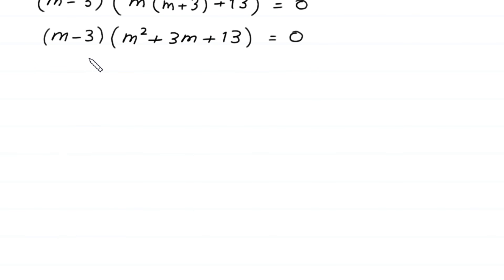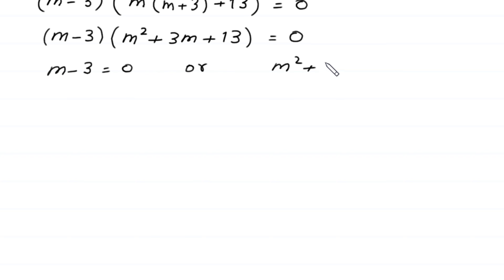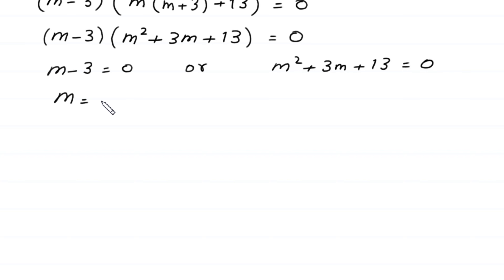From here, either m minus 3 equals 0, or m squared plus 3m plus 13 equals 0. From the first factor, m is equal to 3. This is the first value of m.